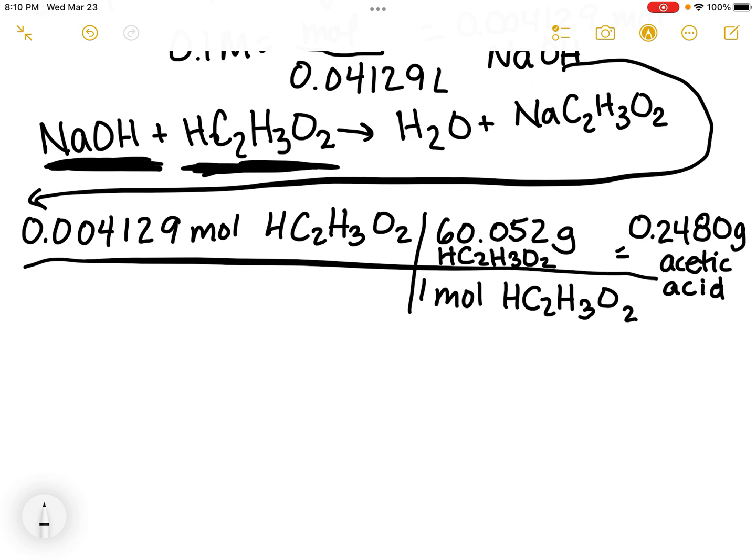How much vinegar did you use? We measured a volume of vinegar. We're going to use density because density is mass over volume. The density of vinegar is 1.05 grams per milliliter.